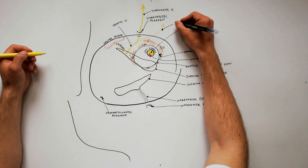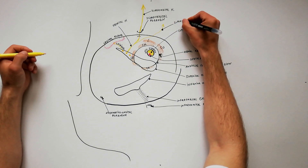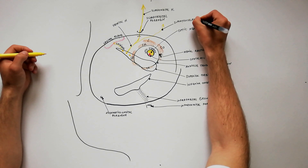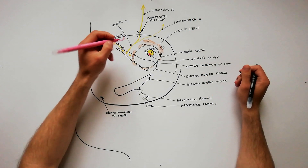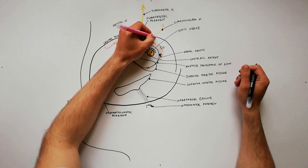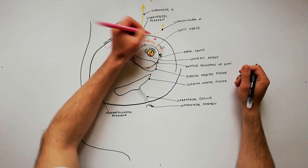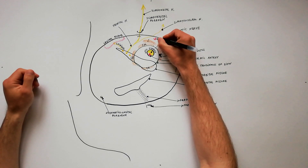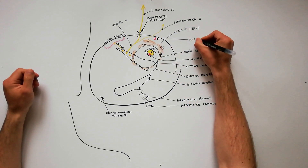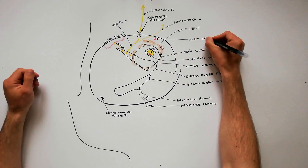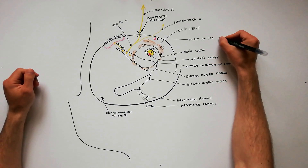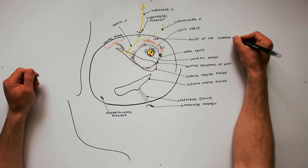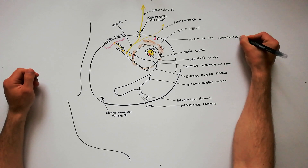The supratrochlear nerve is smaller than the nearby supraorbital nerve. It passes above the pulley of the superior oblique muscle and then exits the orbit through a small notch located between the pulley of the superior oblique and the supraorbital foramen. It supplies the skin of the lower part of the forehead close to the midline, the conjunctiva, and the skin of the upper eyelid.